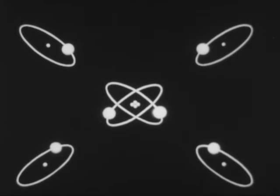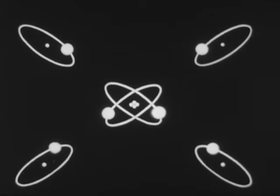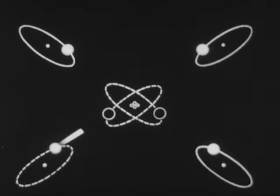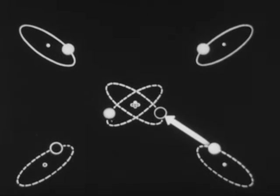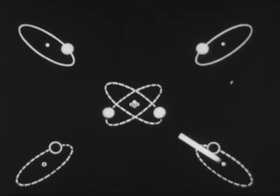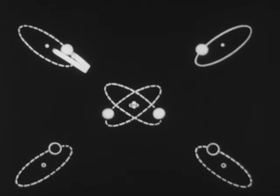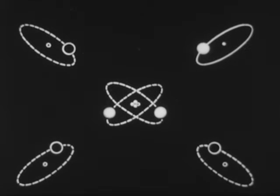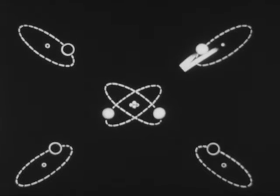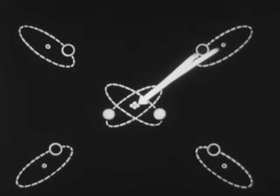Now let's look at one helium atom together with four hydrogen atoms. Notice that the four hydrogen atoms contain all the parts needed for one helium atom: an electron and a proton, an electron and a proton, an electron and a proton, a proton-and-electron combination to form one neutron, and another such combination to form a second neutron.